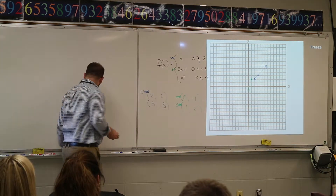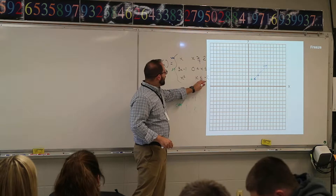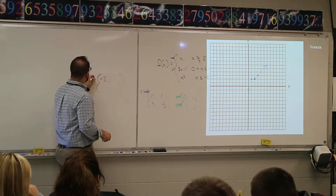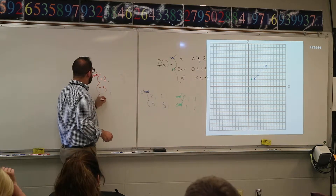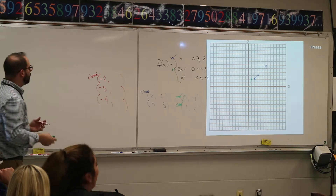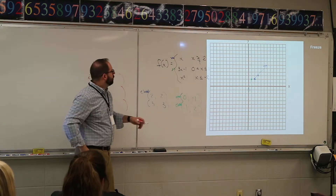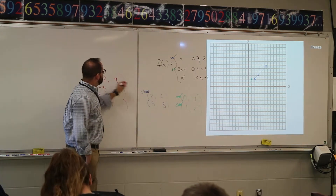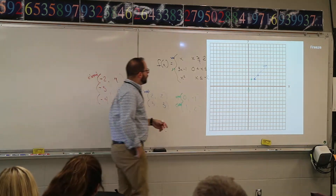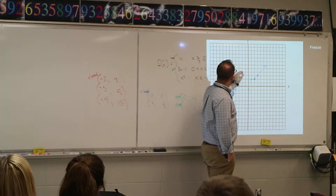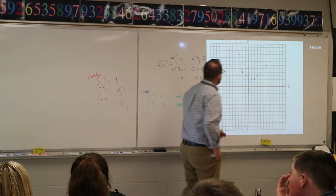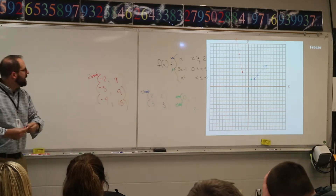For the last piece — x squared for x less than or equal to negative 2 — I'll plug in negative two (closed circle), negative three, and negative four. Negative two squared is four, negative three squared is nine, negative four squared is 16, which goes off the graph. So: negative two comma four (closed circle), negative three comma nine (closed circle), curving upward. That's my piecewise graph.